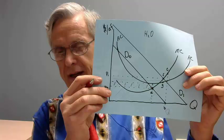So flat fee is expensive and not efficient — there's going to be a large deadweight loss. Suppose we go to average cost pricing. Let's find where D0 intersects the average cost curve — that's here at point M.